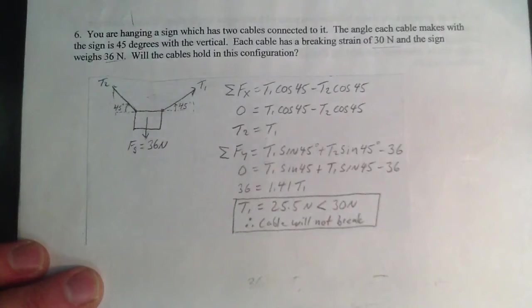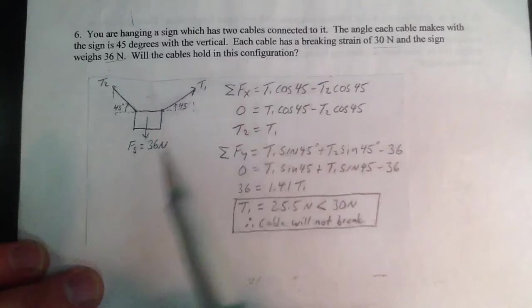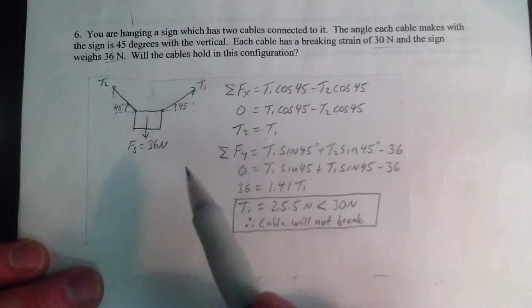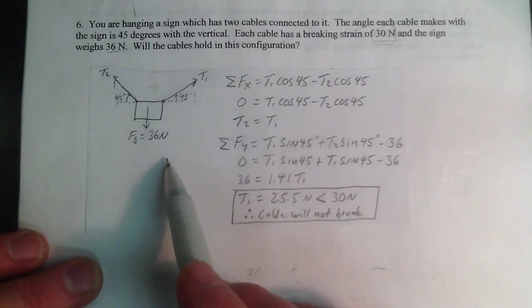Now you've got to be careful. I have a breaking strain of 30 Newton, sign weighs 36. A lot of students think of course it will hold or it will break because this is bigger than this. But remember, I'm holding it at an angle. So what is the breaking strain if this 30 Newtons is not holding it straight up, but holding it at an angle? So this is a comparison value. Let's find out how much actual tension is in the cable, 25.5. It's less than 30 Newtons. So this is not going to break, even though this number is less than this number. Be careful of that.